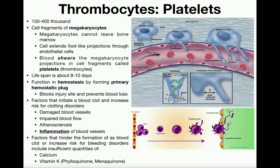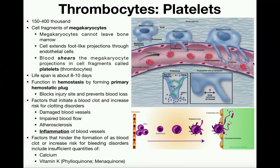If a blood clot were to stick on the vessel wall it would occlude blood flow — when it sticks on the vessel wall that's called a thrombus. If that thrombus were to break loose and travel freely in the blood it becomes an embolus. If that embolus moved into the cerebral arteries it could cut off blood flow to part of the brain and produce a stroke. If it made its way into the coronary arteries it would cause a heart attack. So embolus — very, very bad.